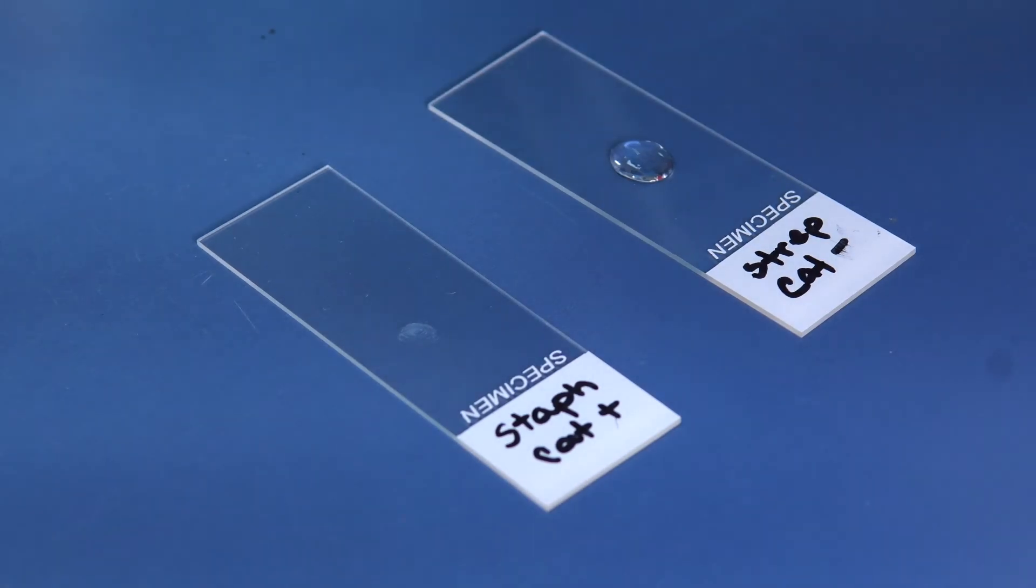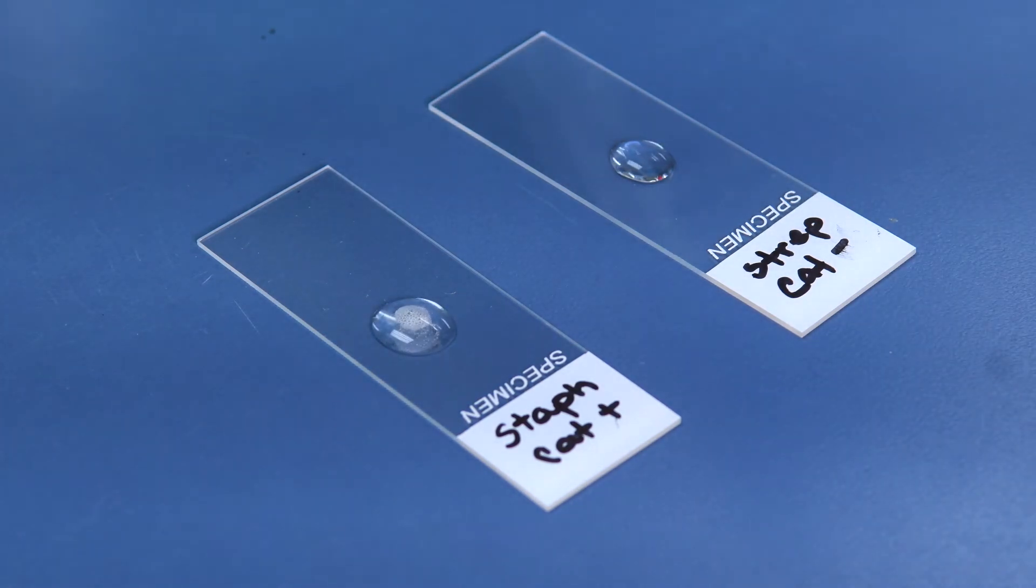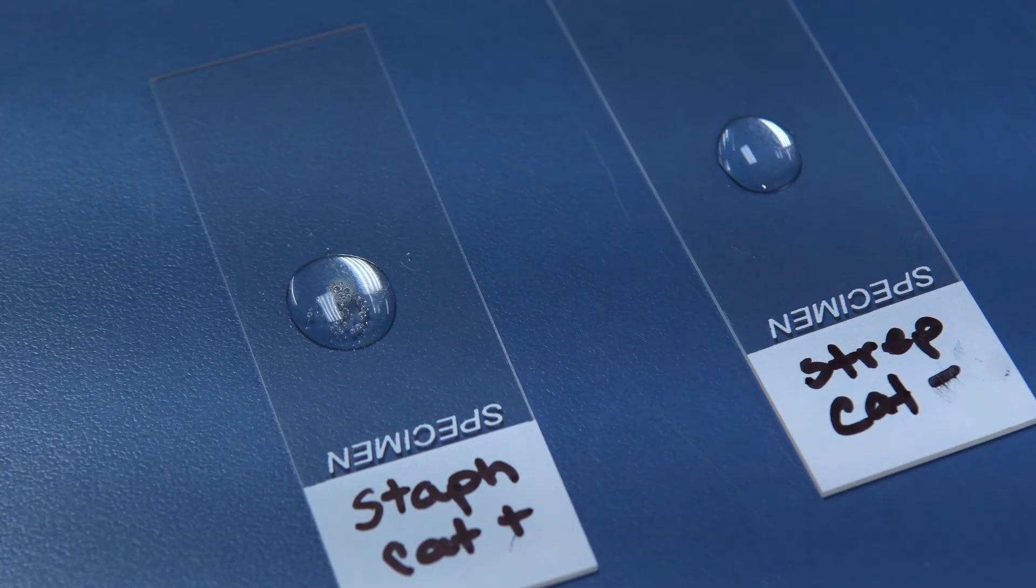Release 2-3 drops of hydrogen peroxide onto the Staphylococcus slide without mixing. The bubbling effect indicates that your sample is catalase positive, as the catalase enzyme is breaking down the hydrogen peroxide into water and oxygen, which you can see in the bubbles.